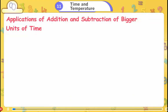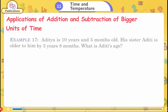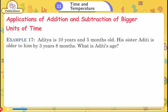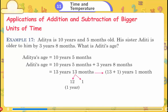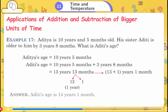Applications of Addition and Subtraction of Bigger Units. Example 17: Aditya is 10 years 5 months old. His sister is older by 3 years 8 months. What is his sister's age? 10y 5m + 3y 8m = 13y 13m. Since 13 months = 1 year 1 month, the answer is 14 years 1 month.